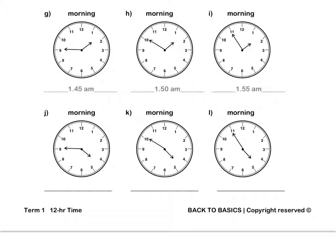For H, it is 50 minutes past 1.00 AM so we write 1.50 AM. For I, it is 55 minutes past 1.00 AM. Pause this video to complete the rest of this question.